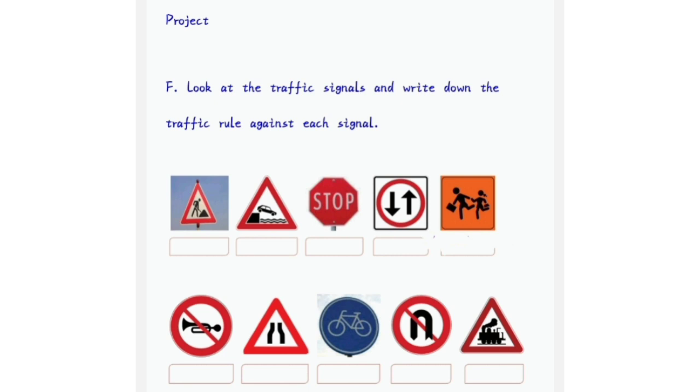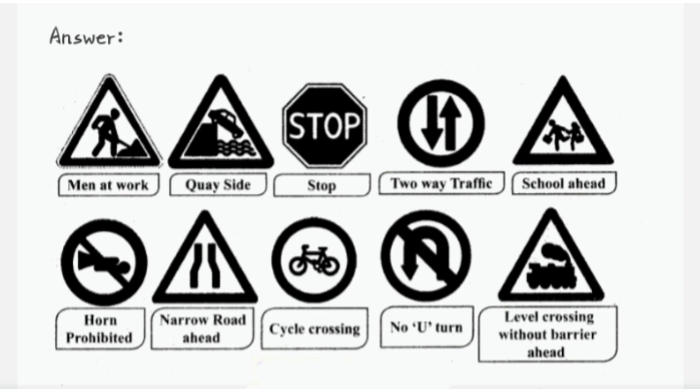Next one, they given a small project. Look at the traffic signals and write down the traffic rules against each signal. They given us sign of the traffic signals. You can see in the roadside. We want to answer what the traffic indicate to us. Look at the first picture, it means men at work. Second one, quayside. Third one, stop. Fourth one, indicate two-way traffic. And next one, school ahead.